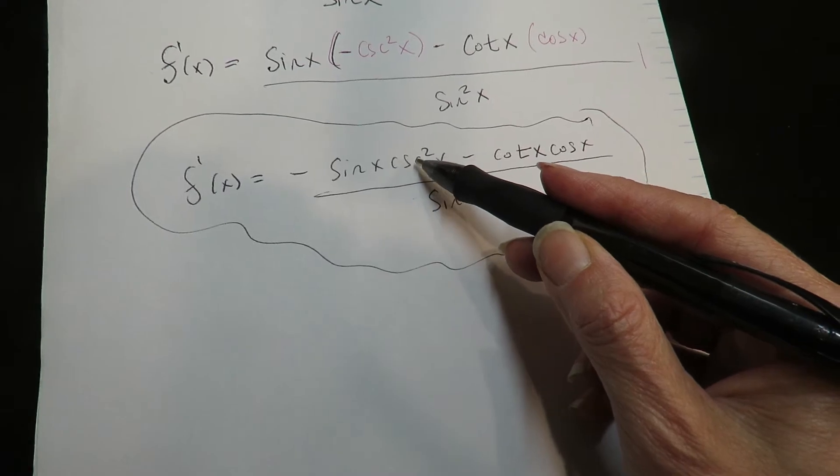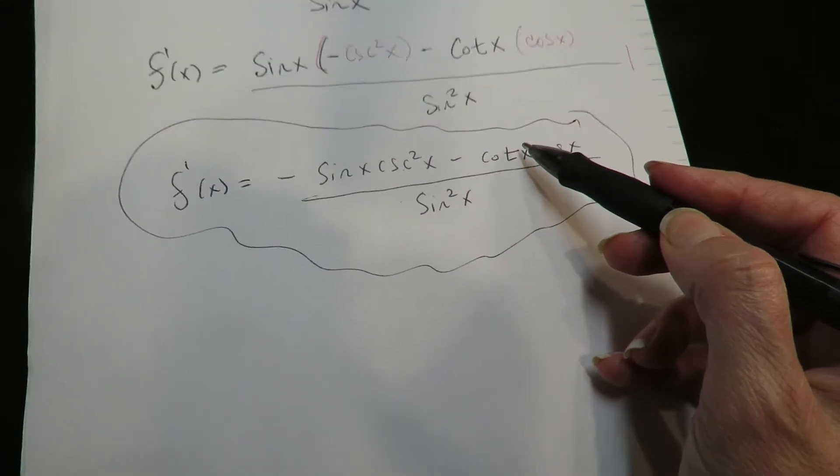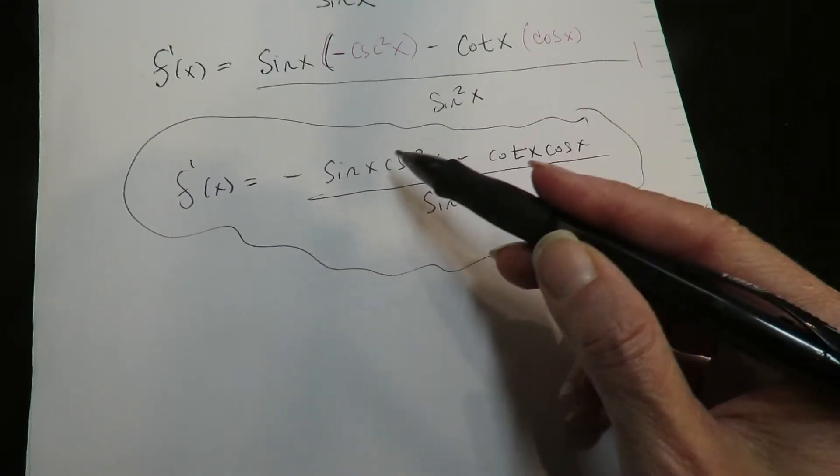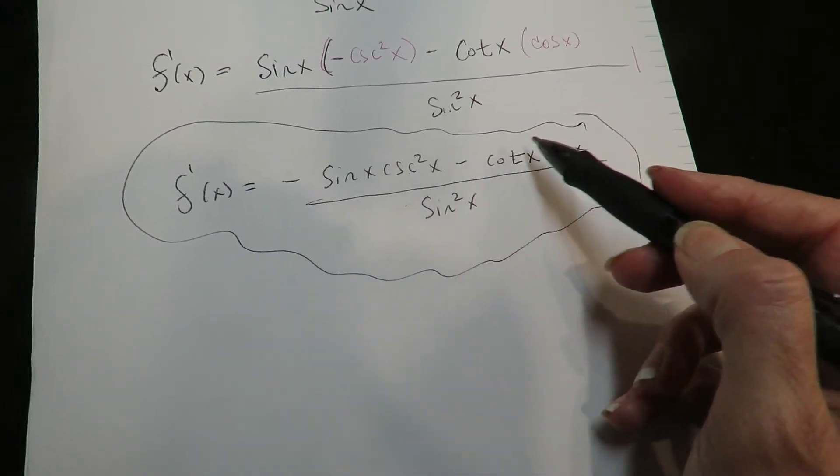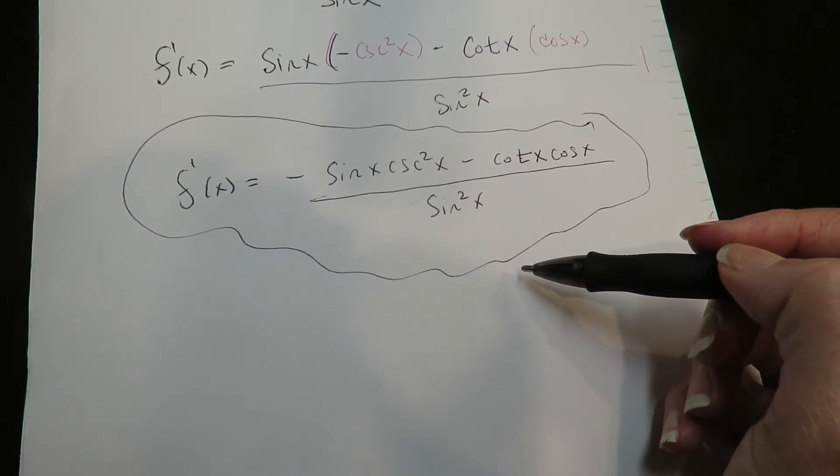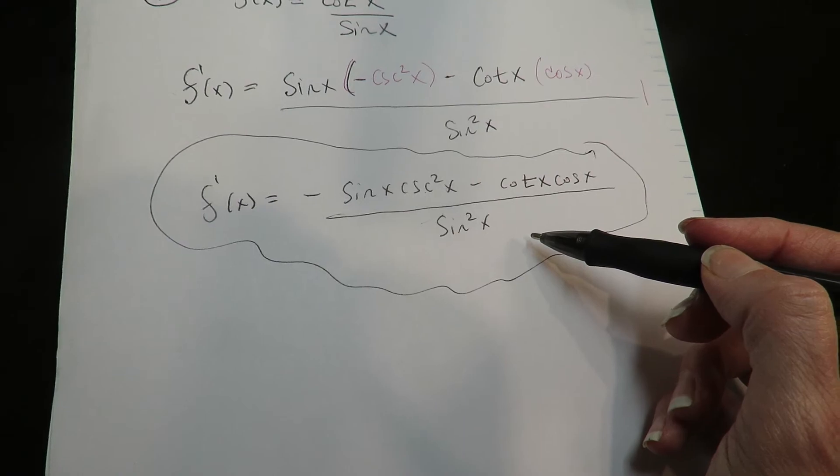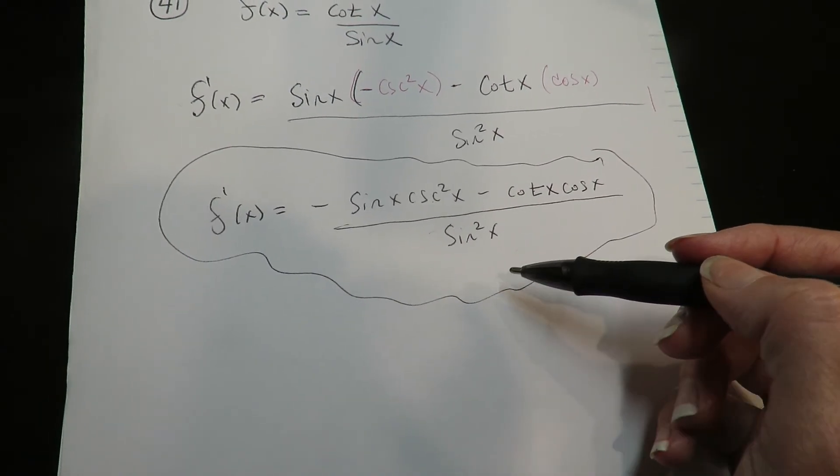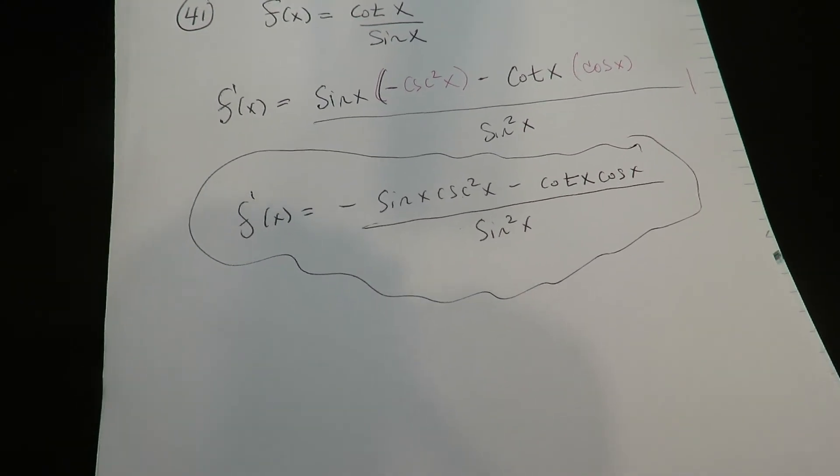But if you want to convert this, this is one over sine squared, this is cosine over sine. You'd have a complex fraction, you'd have to get an LCD, then you'd have to collapse the LCD. It would be quite a bunch of extra steps to go further with this. Alright gang, I'm going to leave it like that. I'll catch you, bye bye.